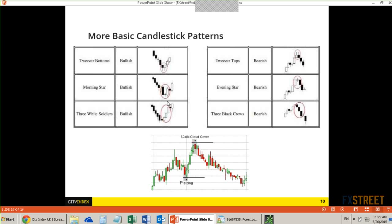We have our stop loss and risk management to take care of us in case things go wrong. First, we want the confluence. Second, we want a trigger to get into the trade — a break to the upside. That tells me short-term momentum is going in the direction I think it's going. If things go against me, I'll have a very tight stop loss right underneath the low of this pattern. When you're playing with these types of patterns and support and resistance, most of the time you have a very tight area where you place your stop loss — simply where the market is telling you you're wrong.